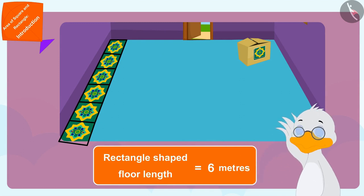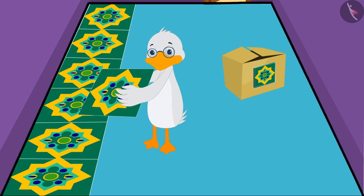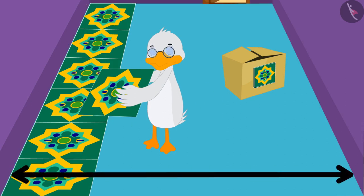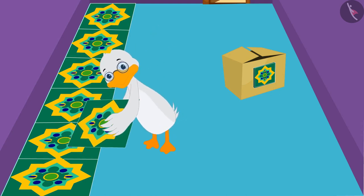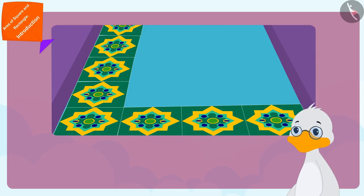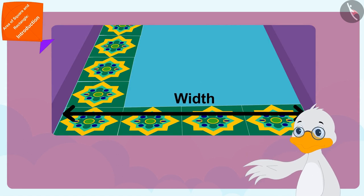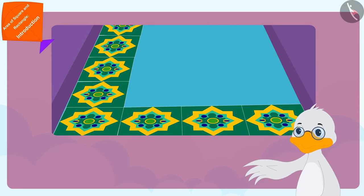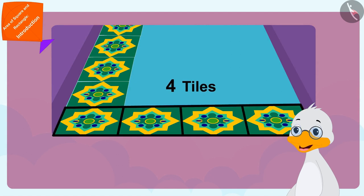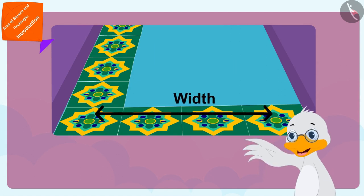Then uncle started laying the tiles along the width of his rectangle shaped floor. Uncle laid a total of four tiles along the width of his floor.